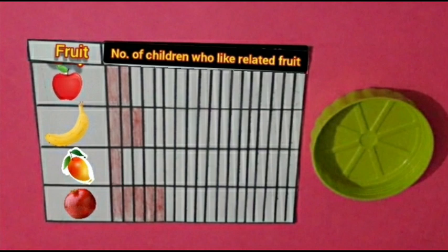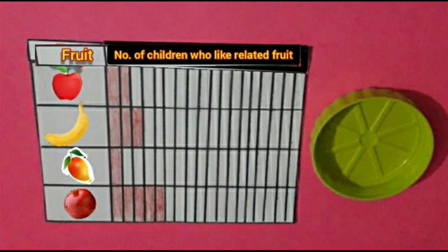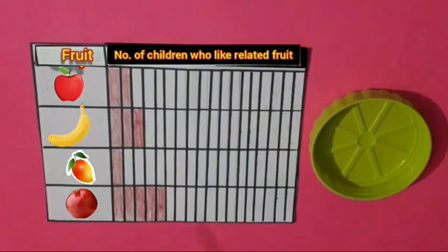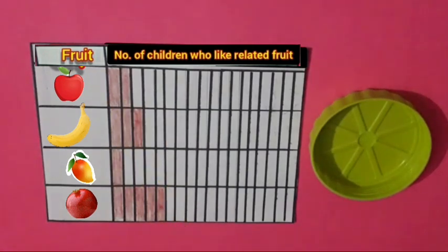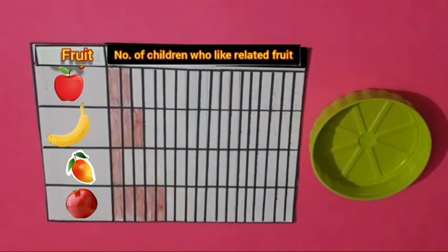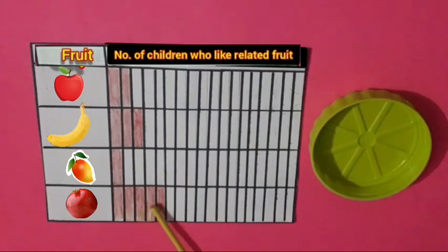Some children of our class like apple, some like banana, some like mango and some like pomegranate. Let's count with me. One, two, three, four, five — five children like pomegranate.